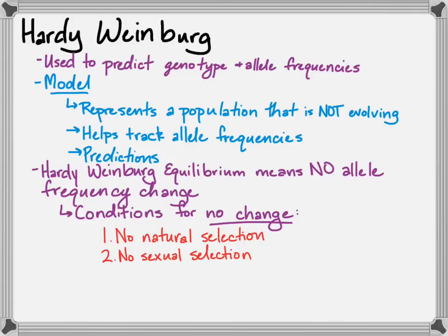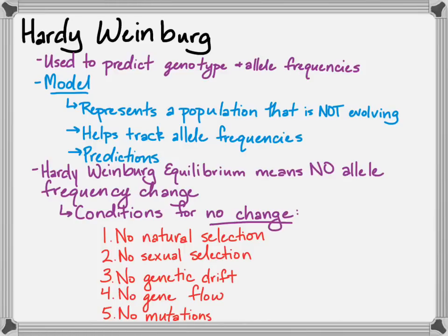The second condition is no sexual selection, meaning all individuals are mating randomly. Third, you can't have genetic drift, so you need really, really large — almost infinitely large — populations. Again, not reality, but a good predictive tool. Fourth, no gene flow, meaning no migration in or out of populations. And fifth, no mutations — good luck telling those DNA polymerases to stop making errors. They do an outstanding job, but there will be mutations.